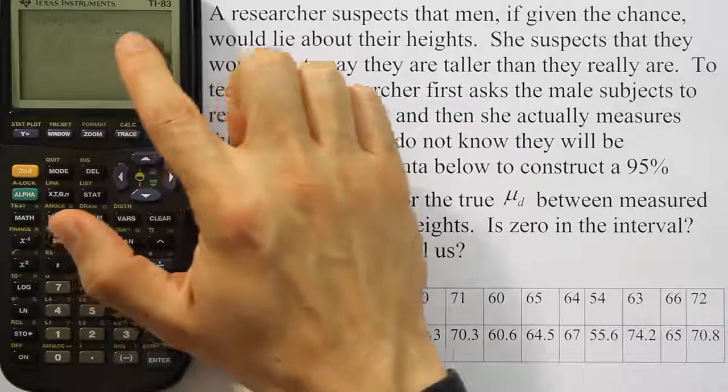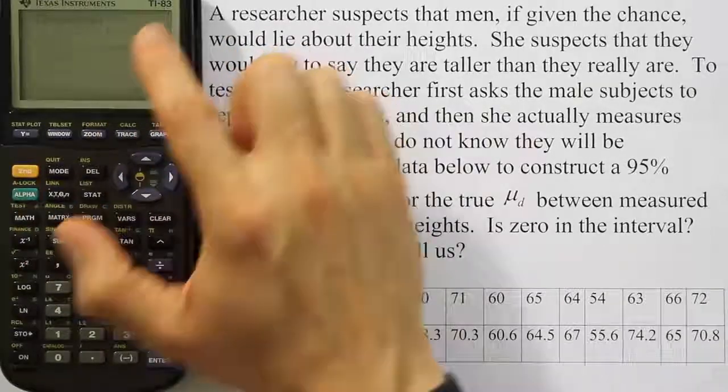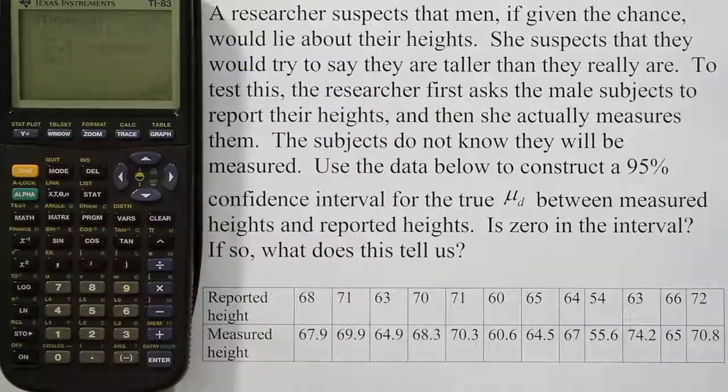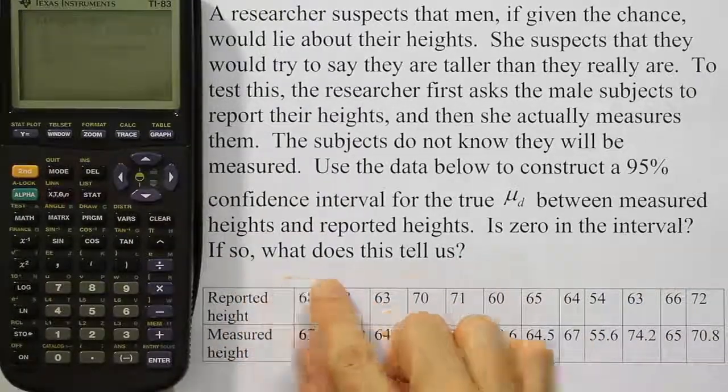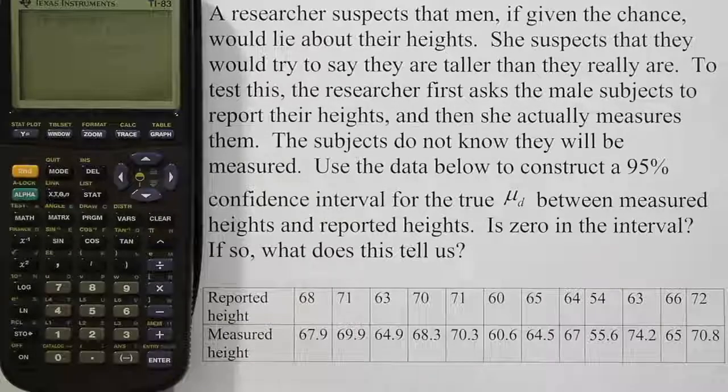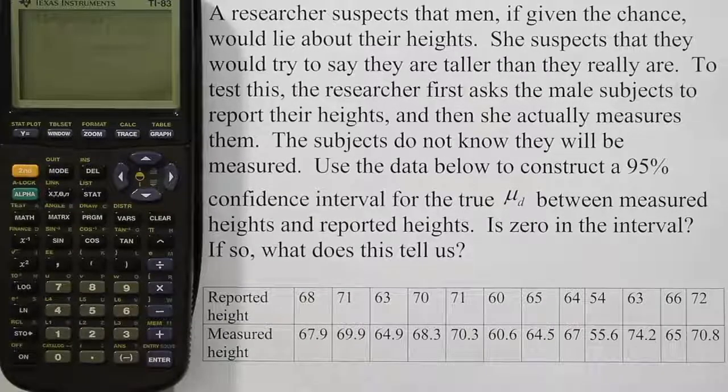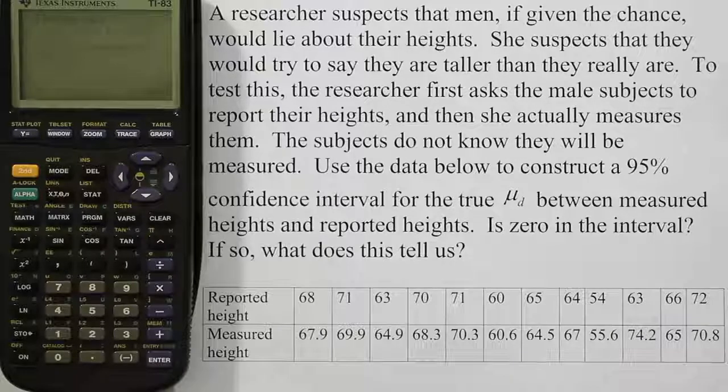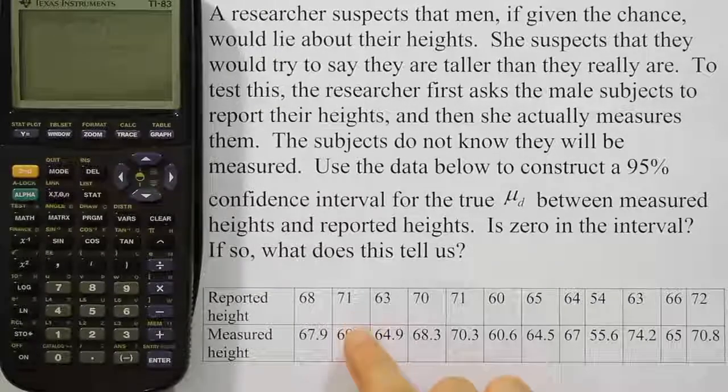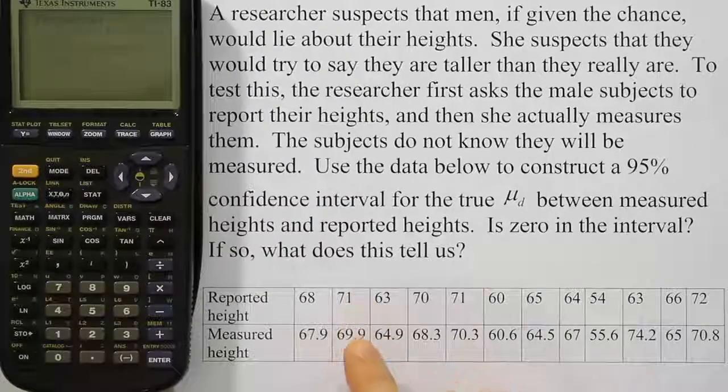We got negative 3.236 up to positive 1.236. So basically zero is in the interval and it asks, if so, what does this tell us?